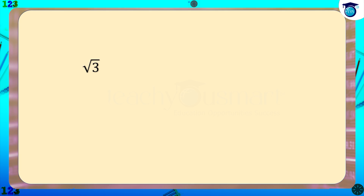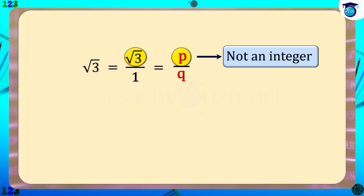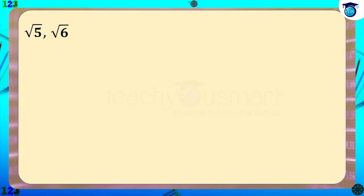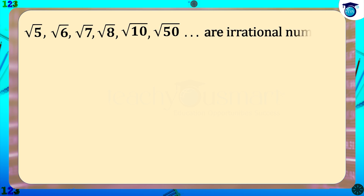Next, consider √3. We can write √3 as √3/1, which is in the form p/q, but here also p is not an integer. Therefore √3 is an irrational number. Similarly, √5, √6, √7, √8, √10, √50, etc. are also irrational numbers.